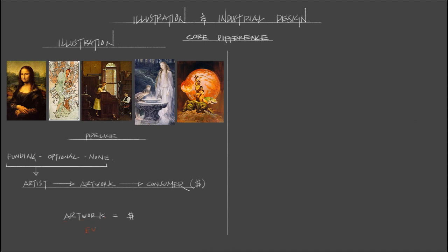The consumer eye equals the artwork — whoever is buying the book cover or the painting, their eye is looking directly at it. This is the end result. This Norman Rockwell painting is the result, and it has value attached to it. If I were to destroy it, that would be a tremendous loss for the collector because the value would be forever lost. That is one of the easiest ways to track the core difference between illustration and industrial design: the money is tied together with the illustration, and the consumer is looking at it directly.